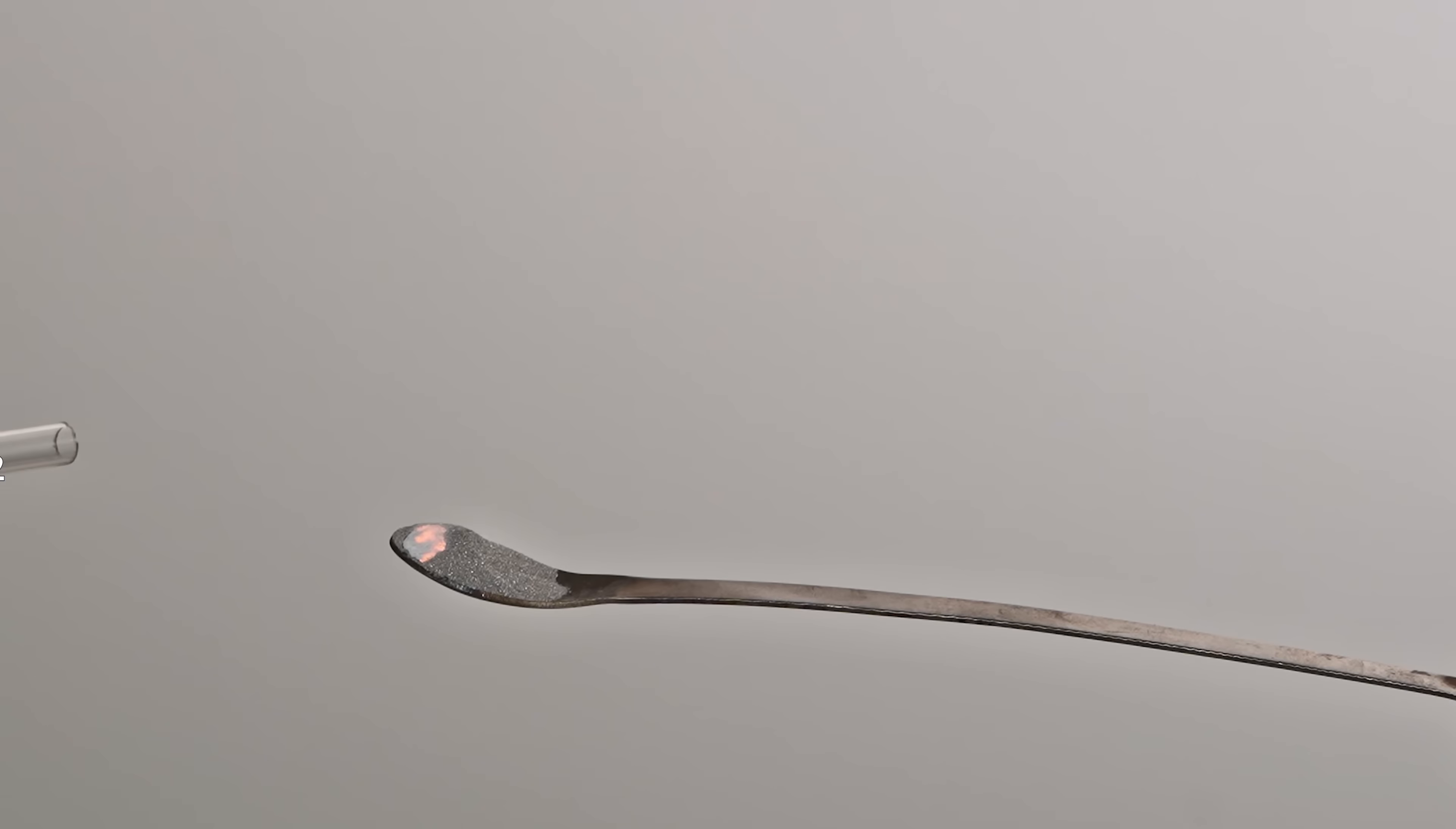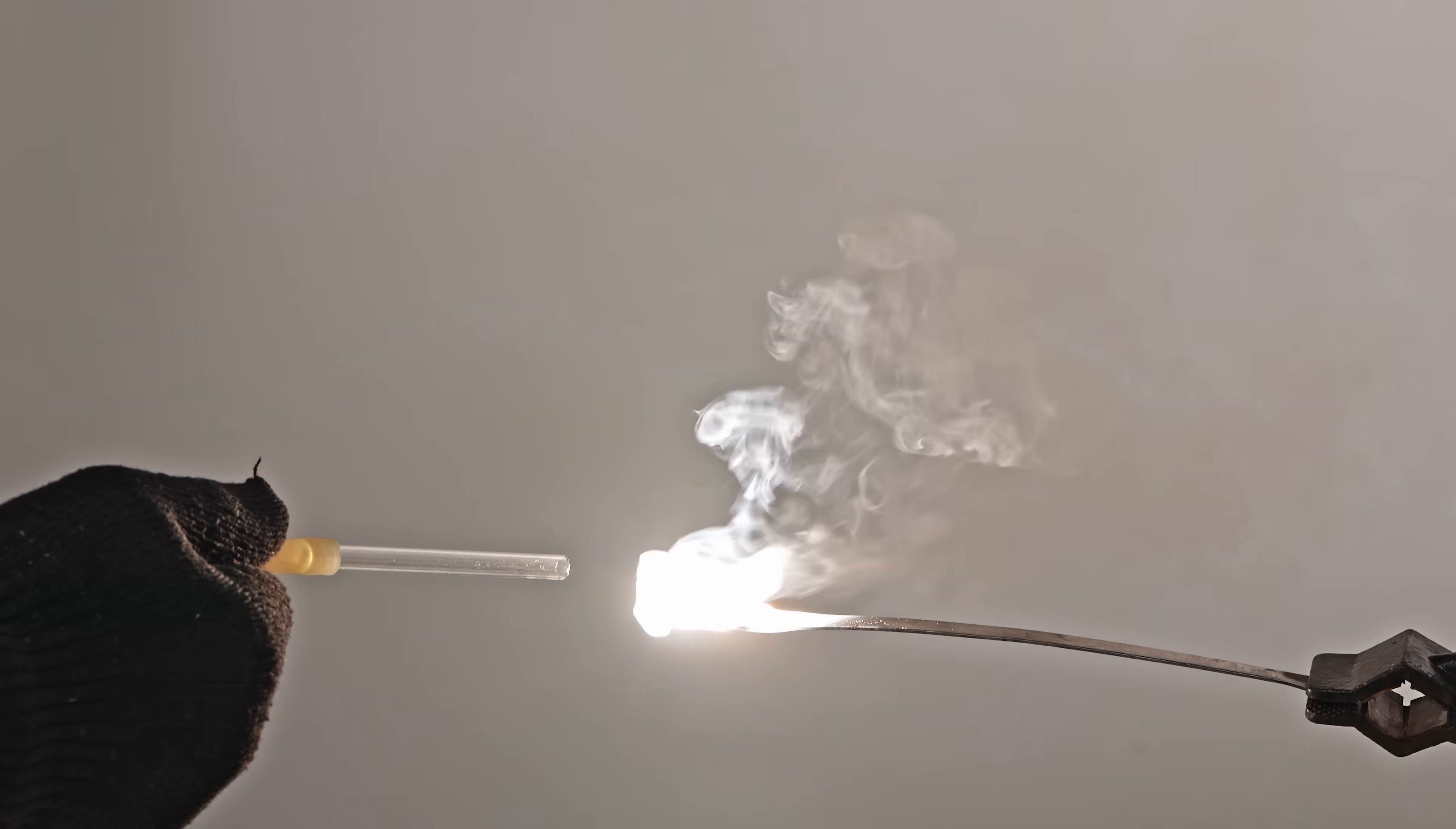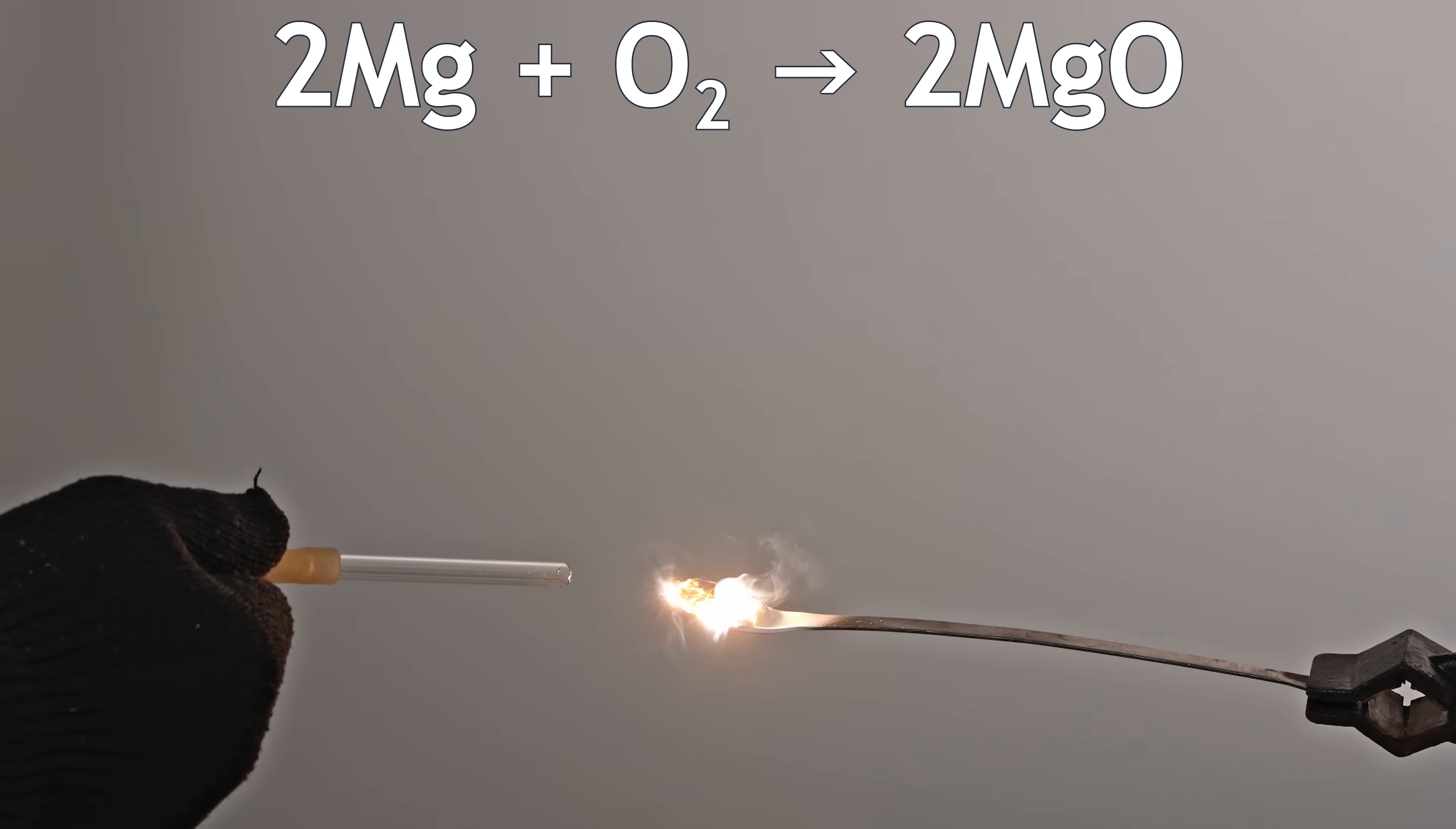Just as elemental magnesium burns in oxygen, magnesium nitride also burns in oxygen, producing magnesium oxide and nitrogen.